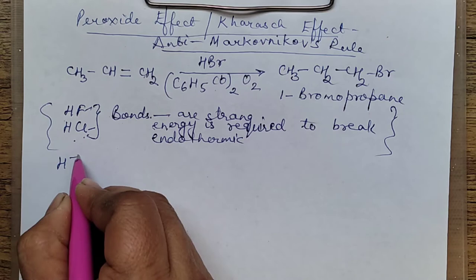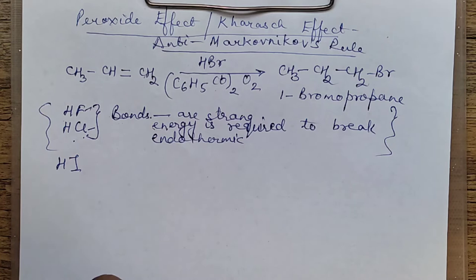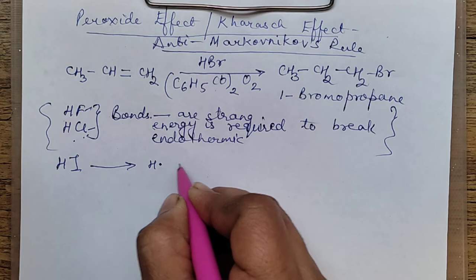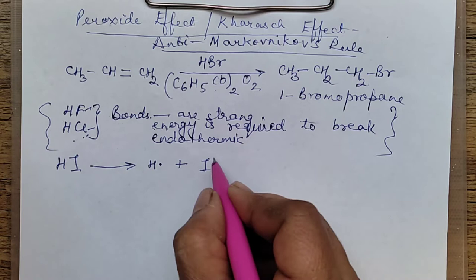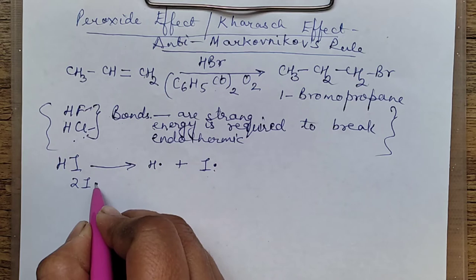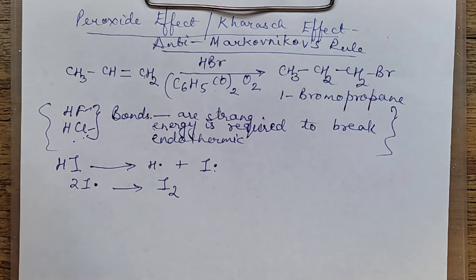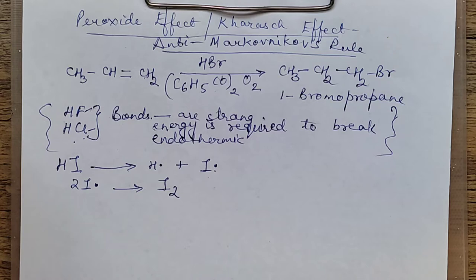What about HI? Anti-Markovnikov's rule is not applicable for HI either. Iodine is quite large in size, so the HI bond does break and forms H radical and iodine free radical. But this iodine free radical is so reactive that it combines with itself and results in the formation of I₂. So rather than carrying out the addition reaction with the alkene, it forms an iodine molecule. Therefore, anti-Markovnikov's rule is not possible with HI.